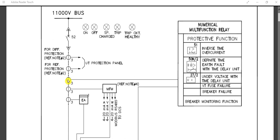The third CT is connected to the main numerical multi-function relay, which provides protection for this particular feeder. This numerical multi-function relay performs several protection functions. The features include relay functions 51, which as you know is inverse time overcurrent — basically inverse time phase overcurrent with IDMT characteristic.